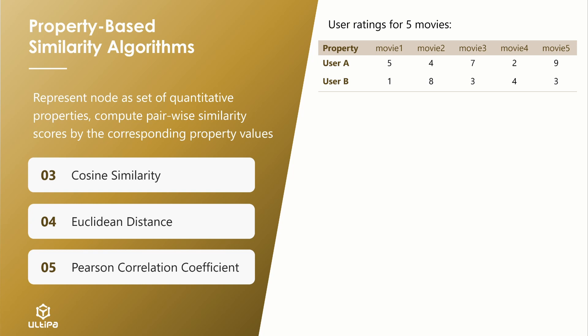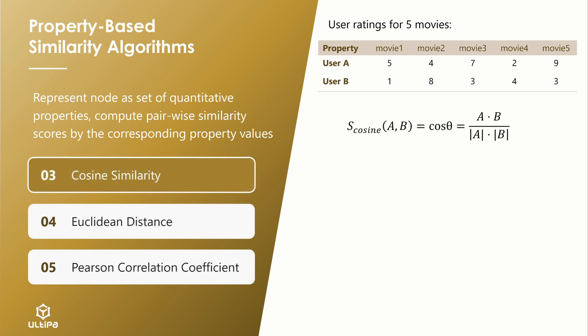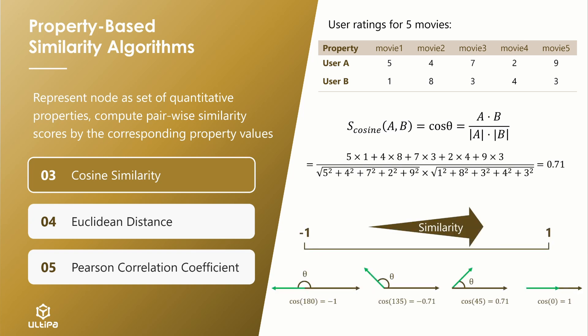If we view A and B as two five-dimensional vectors, cosine similarity between them equals to the cosine of angle theta between A and B. This is computed by taking the dot product of the two vectors and dividing it by the product of their magnitudes. The result is 0.71. Cosine similarity takes range from minus 1 to 1. Two vectors with exactly the same direction has a cosine similarity of 1, whereas two vectors completely opposed to each other have a similarity of minus 1. Cosine similarity is a measurement of direction. Their magnitude is not of importance.